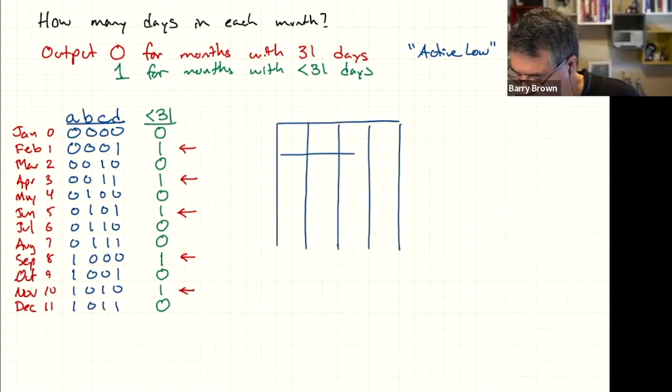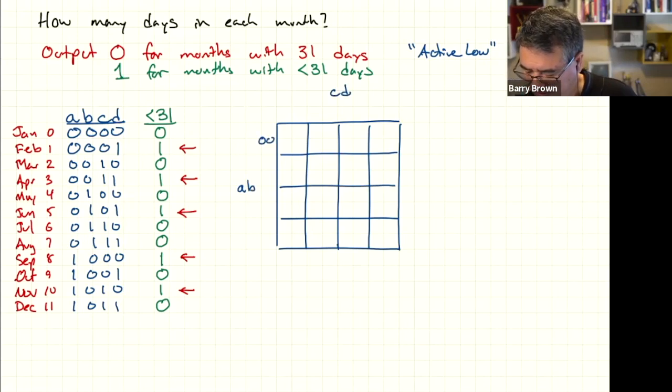Okay, let's make this grid. We're going to need a 4-by-4 grid because we've got four variables. Down one side, I'm going to put A, B, and across the top, I'm going to put C, D. And I'm going to do that as the binary numbers because I have a nice truth table that uses binary numbers. So I'm going to make a Karnaugh map that uses binary numbers. Remember to do a gray code.